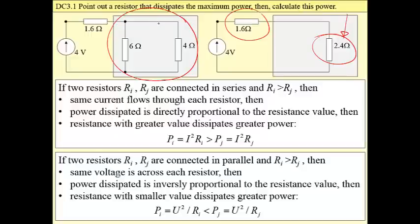Then to answer this question, to point out a resistor that dissipates the maximum power, we have to go further. We have to check this parallel connection.